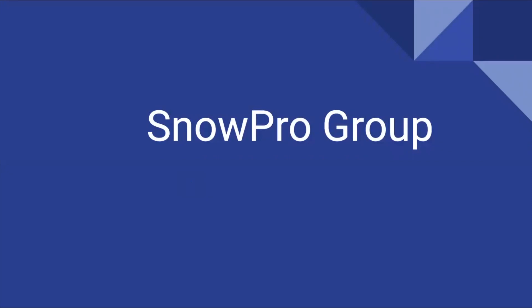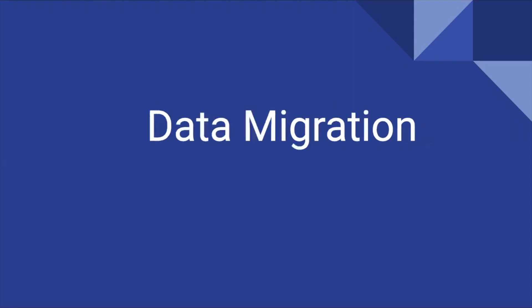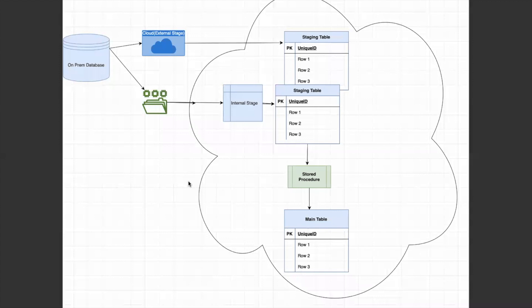Welcome to SnowPro Group. In this video we are going to see a real-time scenario where we are migrating data from an on-prem database to the Snowflake data cloud. In this process I am going to show you a stored procedure that I'll use to move data from on-prem staging tables to the main table at the Snowflake site. Let's go through the scenario at a high level and see where the stored procedure comes into the picture.